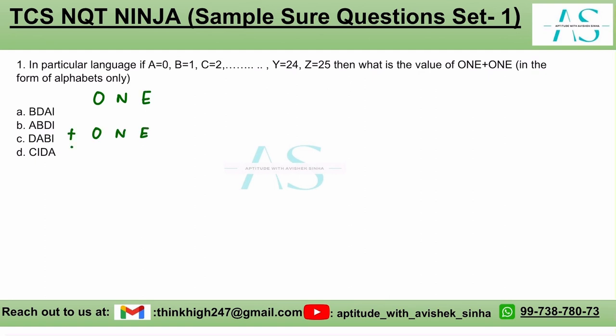From here we can easily say that E would be equal to 4, because D is equal to 3. So 4 plus 4, if you write this as 4 plus 4, you get this value as 8. In place of 8 I can also write the alphabet as I, because 8 would be equivalent to I.